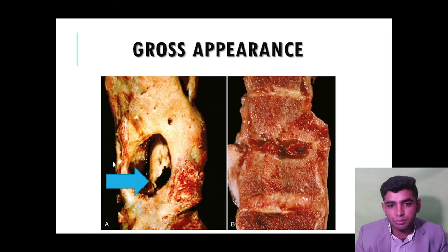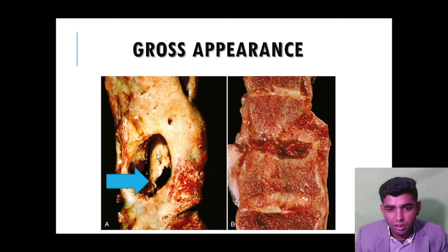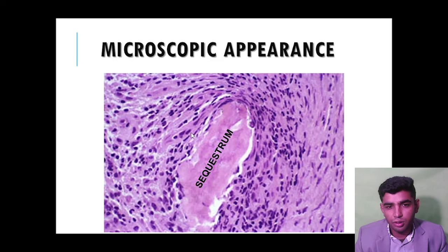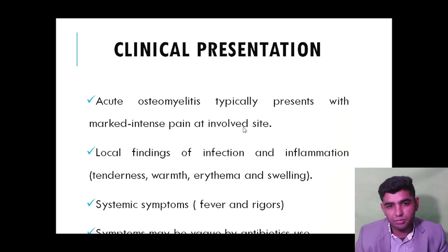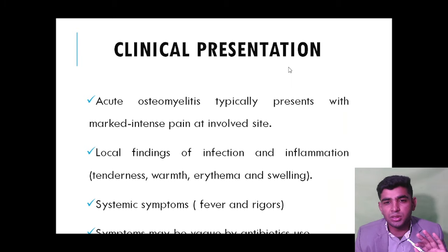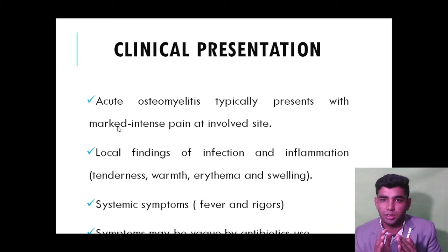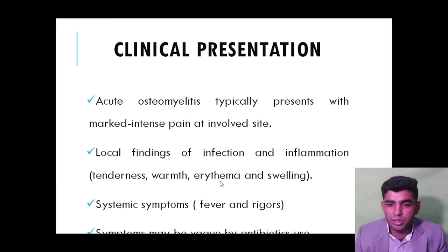In gross morphology, we can see the old bone, the new bone (involucrum), the hole, and the sequestrum. Clinical presentation: typically marked intense pain at the involved site, inflammation, swelling, warmth, and tenderness.